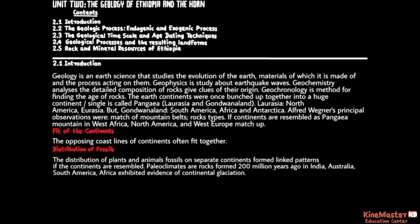If the continents are reassembled, paleoclimate evidence shows that rocks formed 200 million years ago in India, Australia, South America, and Africa all exhibited evidence of continental glaciers.